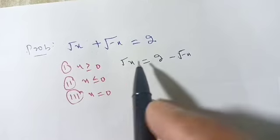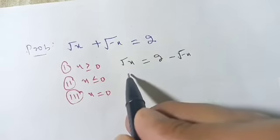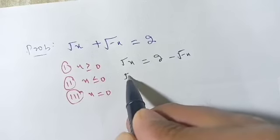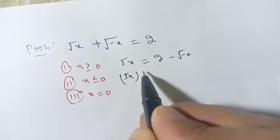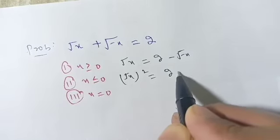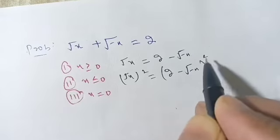To solve this, we square both sides. We have square root of x, whole square, is equal to 2 minus square root of minus of x, whole square.